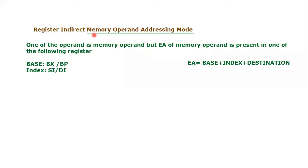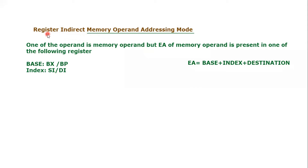It is again a type of memory operand addressing mode. We are considering memory operand addressing mode, but this type's full name is register indirect. Last time we covered direct memory operand addressing mode, but this time we are covering register indirect memory operand addressing mode. Register indirect is also a type of memory operand, so the big name is memory operand, but its sub-classification is register indirect.